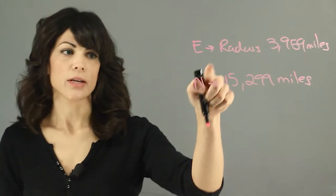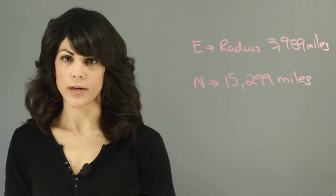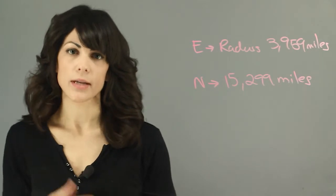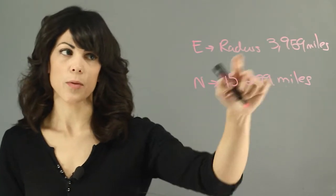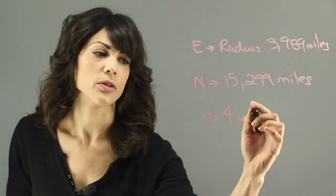So how much bigger is Neptune than Earth? Well, if you were to divide Neptune's radius by Earth's radius, it would give you a factor of how much bigger Neptune is. And if you divide this number by that, you would get that it's approximately 4 times bigger than the Earth.